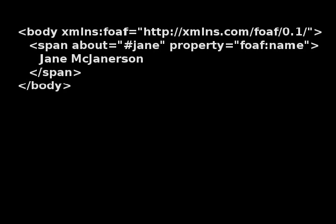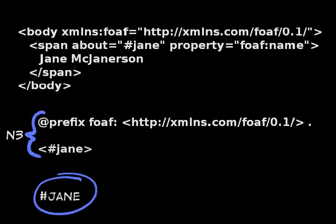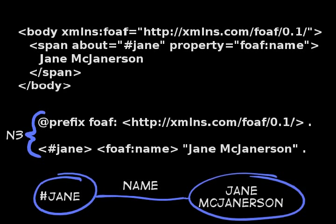Looking back over the example: we define the namespace at the top of the document, then set the subject using the about attribute. This is followed by stating the predicate using a CURIE, which uses the namespace at the top of the document. Finally, we specify the object by wrapping it in the span element. Any browser reading this web page will now know Jane's full name, and that's how you create a simple RDF triple in XHTML using RDFa.